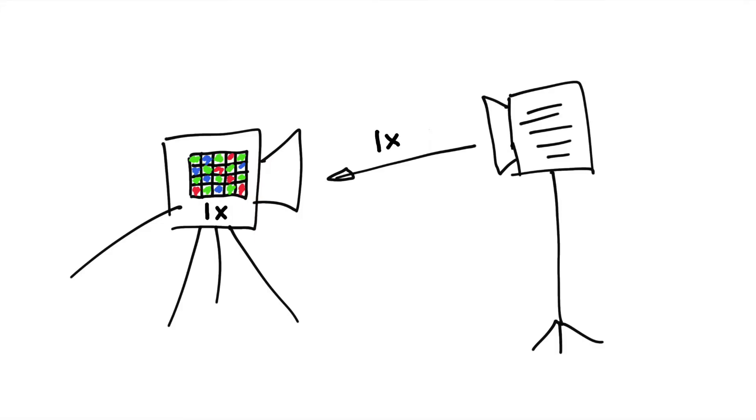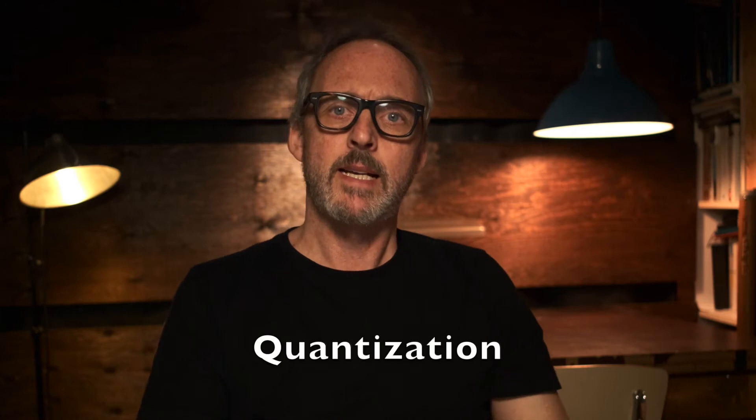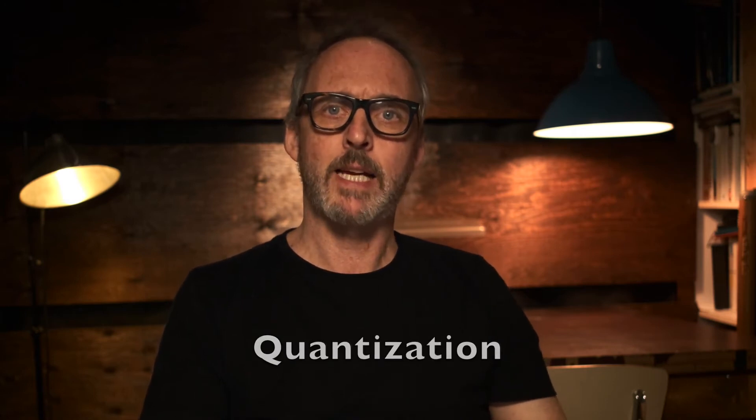All camera sensors, when recording light as an electrical charge, do so in a linear fashion, regardless of their output format. If you double the light in the scene, the sensor sees and captures it as double the pixel value – a one-to-one translation. This process of converting continuous analogue values into digital values is known as quantisation, and the greater the bit depth of the quantisation, the greater the accuracy of this digital representation. While it's common for cameras to capture linear images with a bit depth of 14 or even 16 bits, most professional file formats are only 10-bit, so we run into the issue of how to accurately represent these high bit depth code values within our lower bit depth formats.